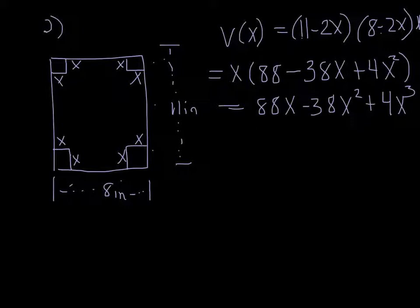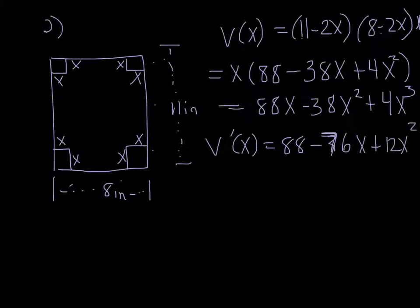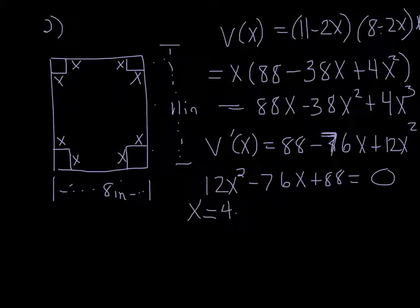So if we're trying to maximize the volume then we want the derivative so the derivative is 88 - 76x + 12x². We need to set that equal to 0 and solve. I recommend using your calculator the quad program for that so a is 12, b is -76, c is 88. We get two dimensions one is 4.81 and the other one is 1.53.